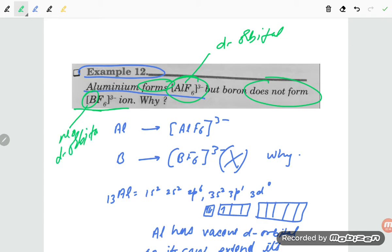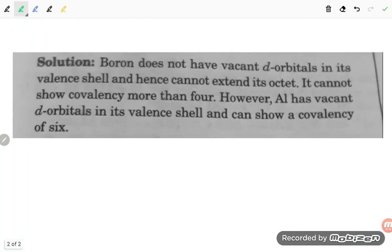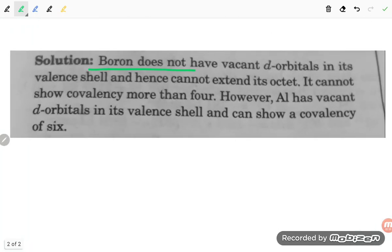You can read the slide: Boron does not have vacant d-orbitals in its valence shell and hence cannot extend its octet. It can show covalency of more than four. However, aluminum has vacant d-orbitals in its valence shell and can show covalency of six, so it can extend its covalency.